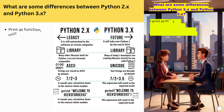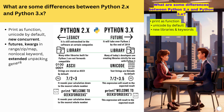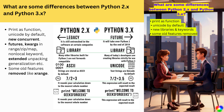What are some differences between Python 2.x and Python 3.x? Python 3 introduces print as a function, Unicode by default, new concurrent.futures, **kwargs and range/zip/map changes, the nonlocal keyword, and extended unpacking generalization. Some old features were removed, like xrange.